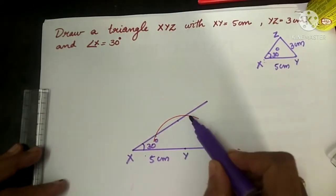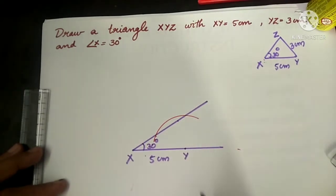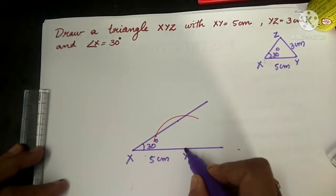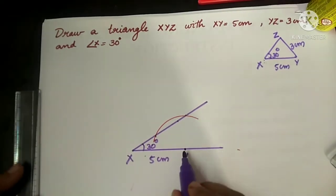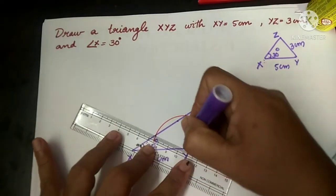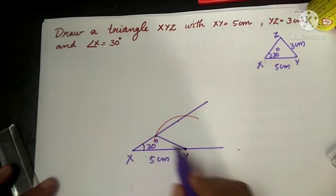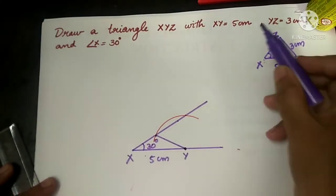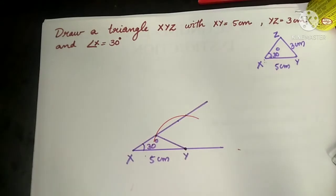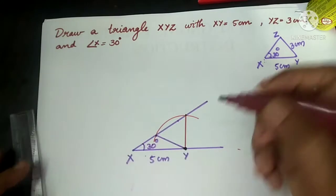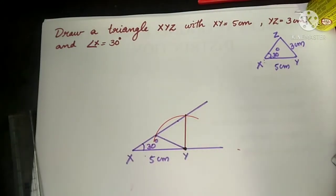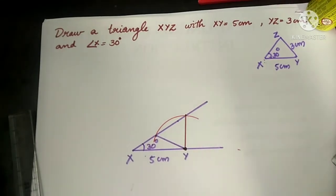Here we get two points of intersection. Either we can join point Y to this point or we can join point Y to the other point — both are correct. I am going to join this point to here. By joining these two points, I get the required triangle. You can join either point of intersection, but please don't draw both — only one triangle is needed.